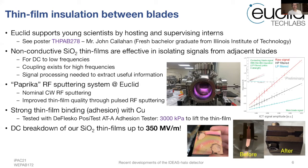Euclid supports young scientists by hosting and supervising interns. This particular study was done by our intern student Mr. John Callahan, who graduated from Illinois Institute of Technology in 2020. I welcome everyone to look at his poster, THPAB278. In his study, he used non-conductive silicon dioxide between adjacent blades as the insulating material. He found that for DC to low frequencies, the insulation was very effective. Coupling will exist at high frequencies, so signal processing is needed to extract useful information, either in-situ or afterwards.